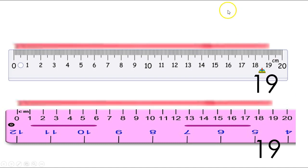Even though these two rulers look different, I got the same answer. Why is that? These rulers are different colors — the white ruler has little notches in between and the pink ruler does not. The pink ruler also has inches, and the white ruler doesn't. But even though they look a little different, the measurement always stays the same. Centimeters are always going to stay the same. Paper clips are not — there are big paper clips and small paper clips. So I will always get a more accurate measurement using a ruler than using objects like a paper clip.